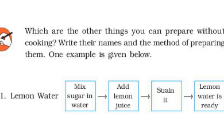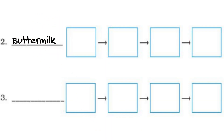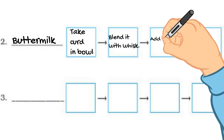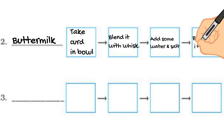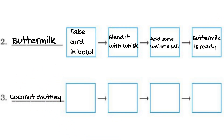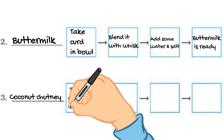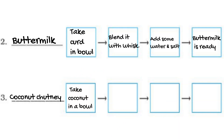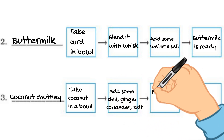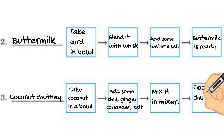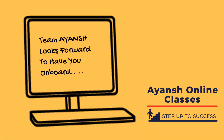Which food items do not need cooking? Buttermilk does not need cooking — add some curd into a bowl, mix it or blend it with a whisk, add some water and salt to taste. Another is coconut chutney — add some coconut, ginger, coriander leaves, and chili and salt to taste, then mix it well using a mixer. The chutney is ready.